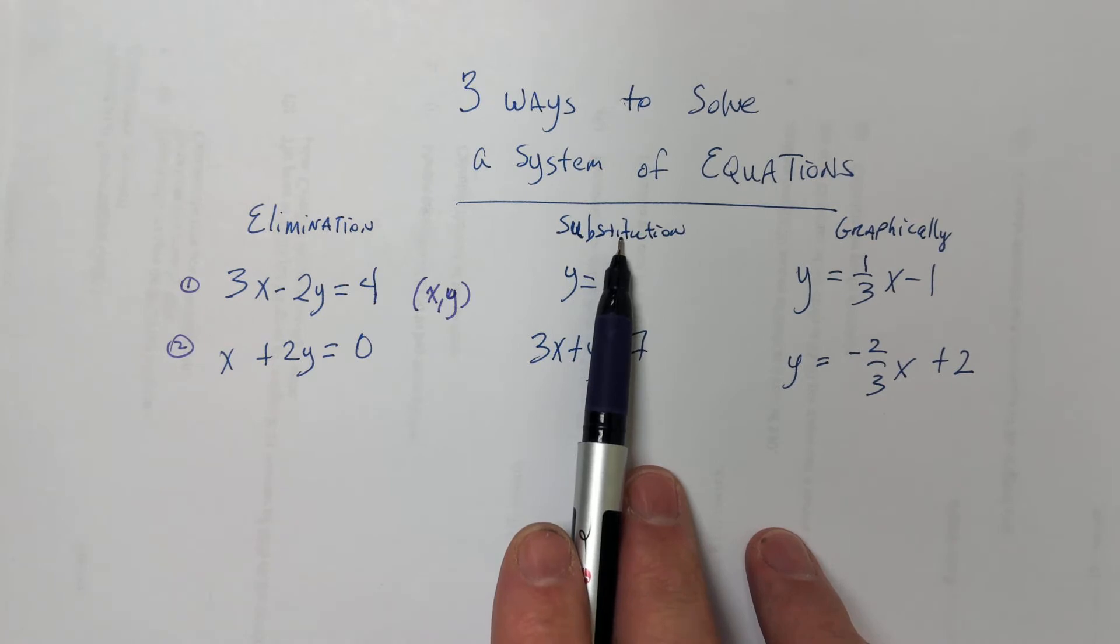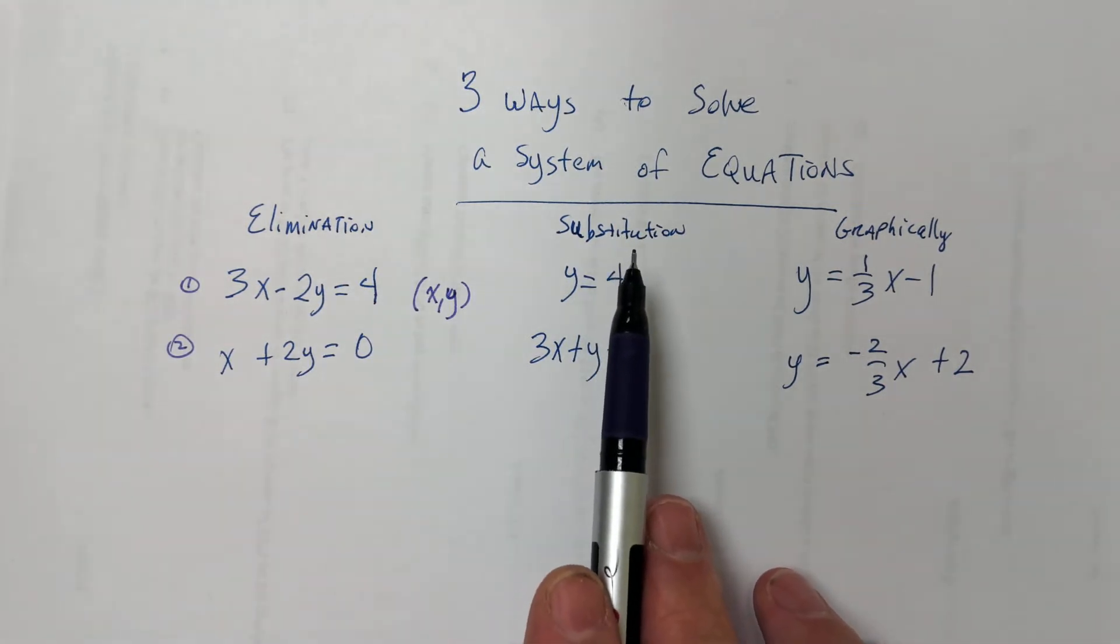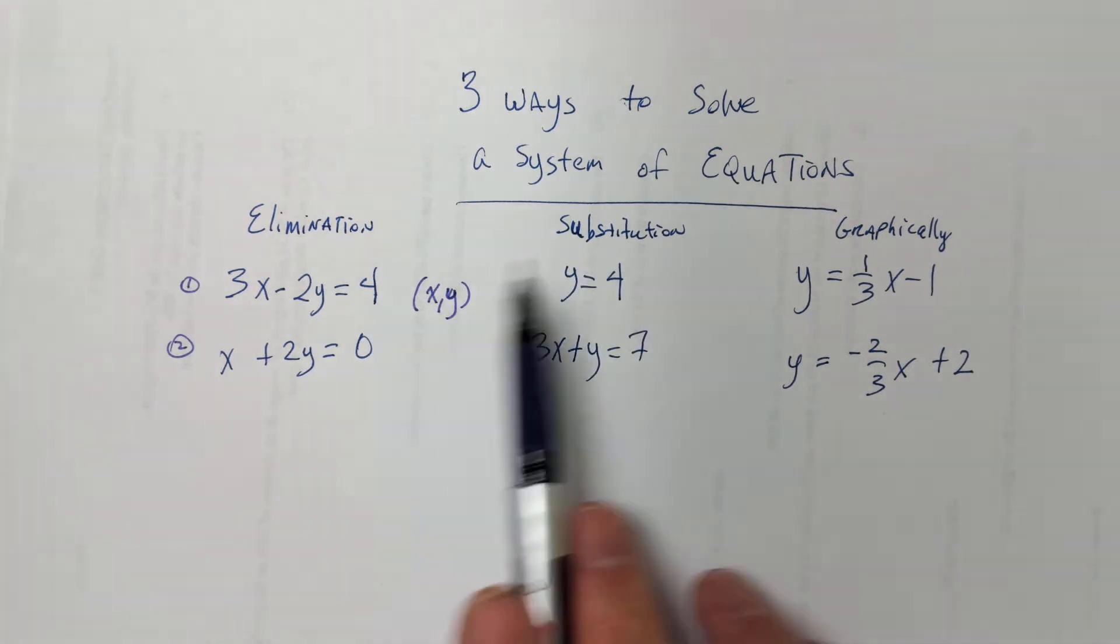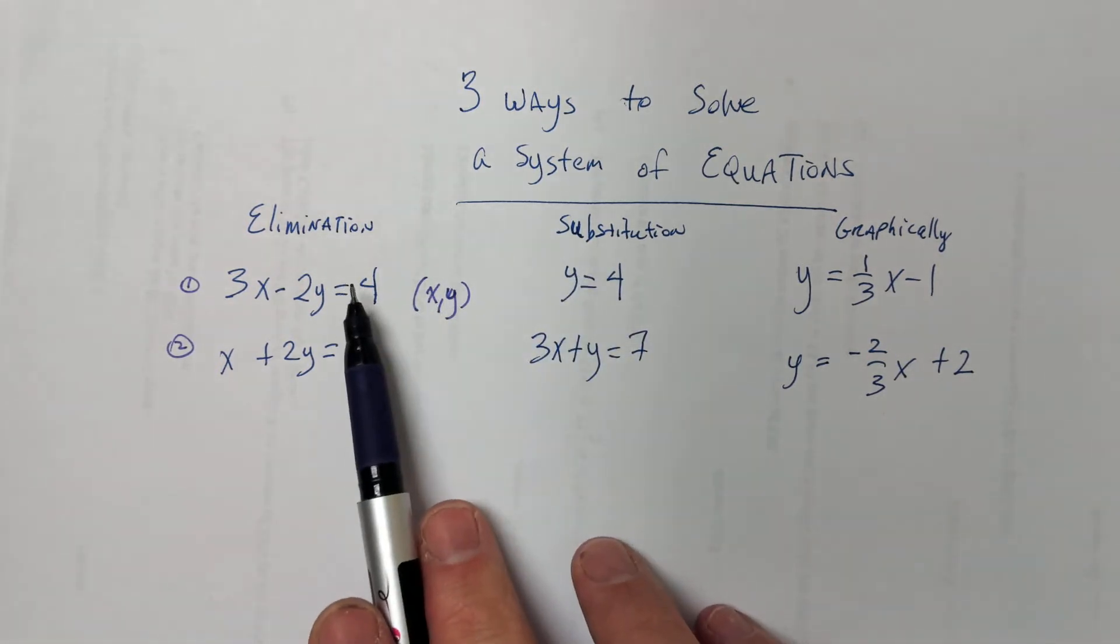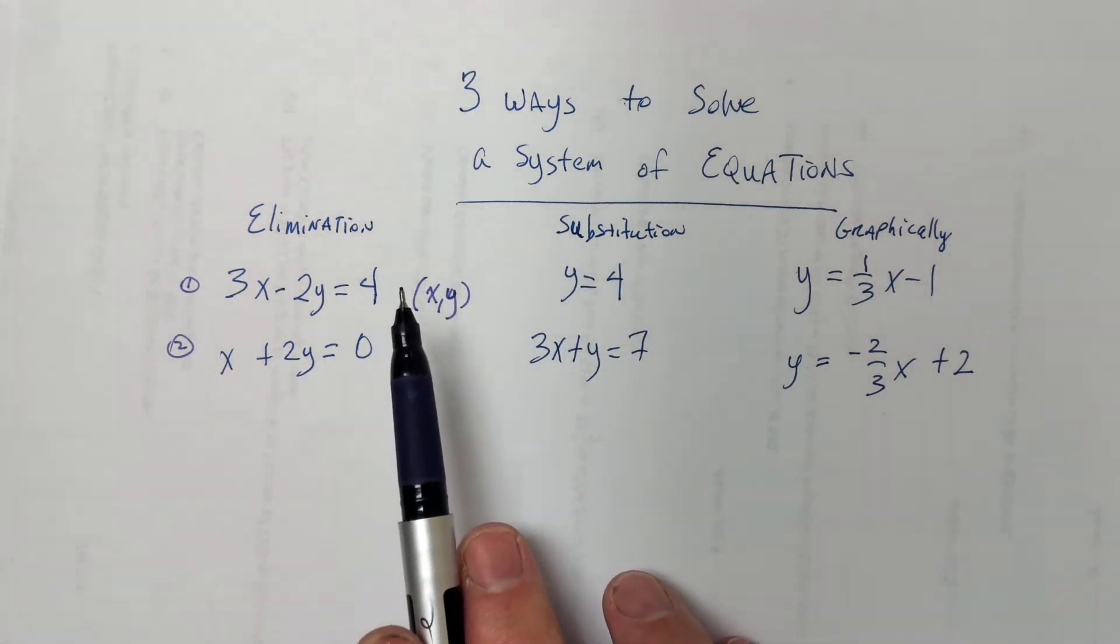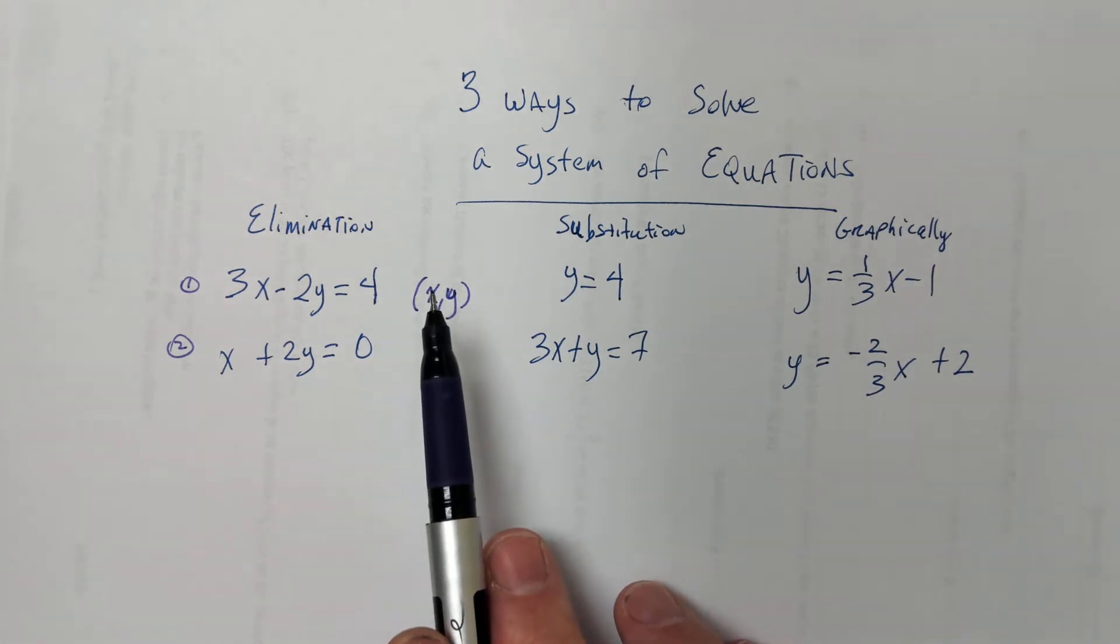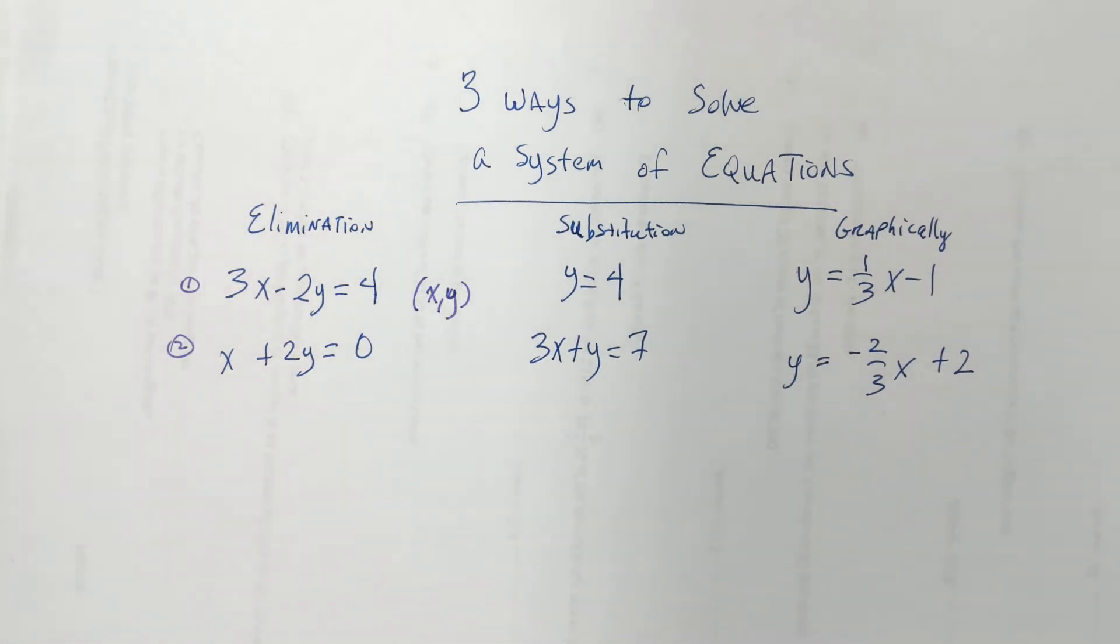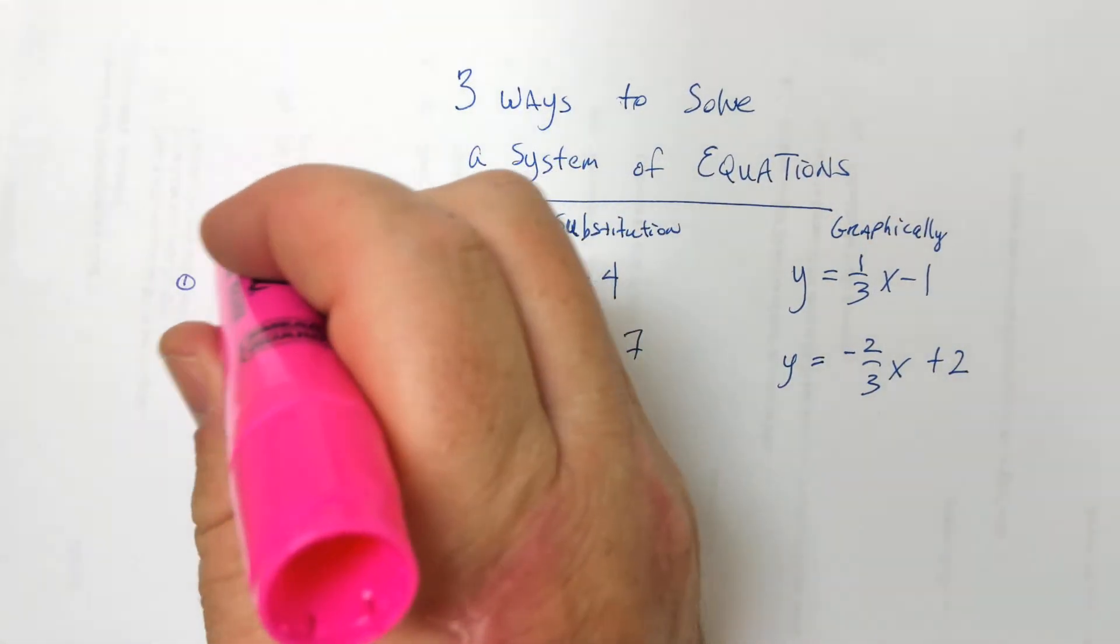On the quiz you're going to take from me when we do this, I won't care which way you do it. But if substitution is easy and you try elimination, it's going to take you a long time, you might run out of time. So you have to know all three ways. So do you guys know the giveaway for elimination, like what would make this way easiest?